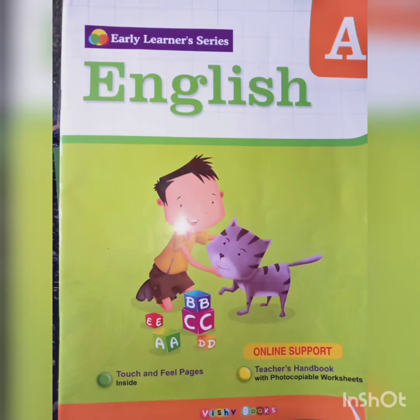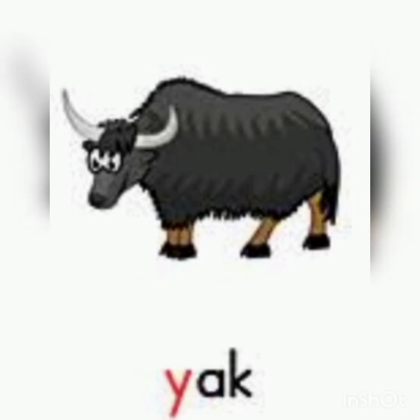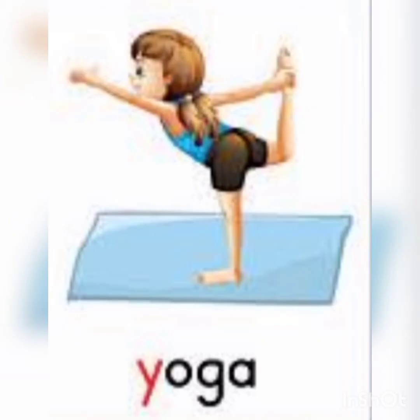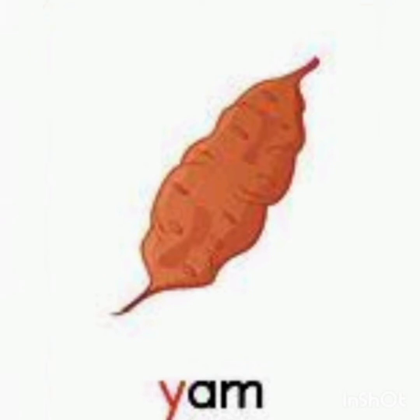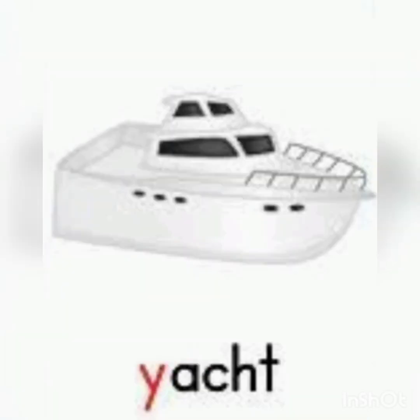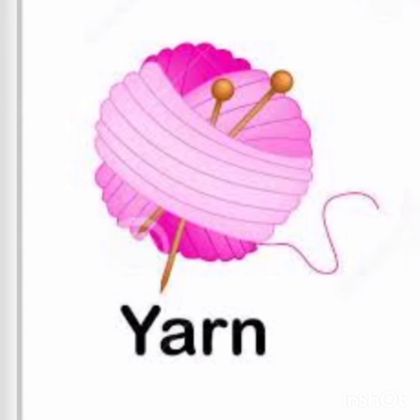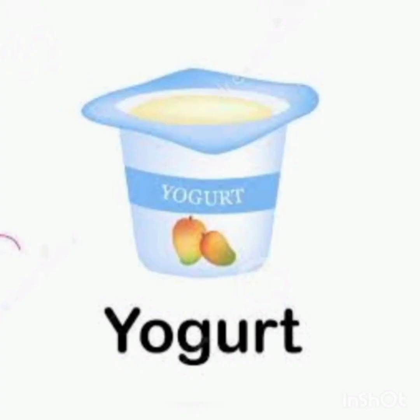Take out your book, Early Learner Series, and take out your page number 35. Now we will see some pictures related to letter Y: Y for yak, Y for yoga, Y for yam, Y for yolk, Y for yoghurt.